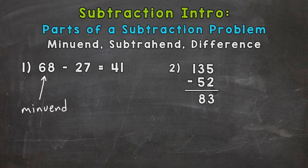Now we're taking away 27. The number being taken away, the quantity being taken away, this is our subtrahend.